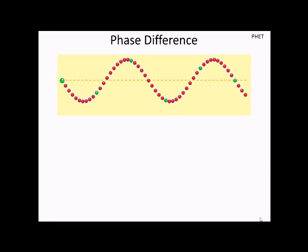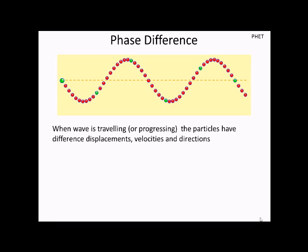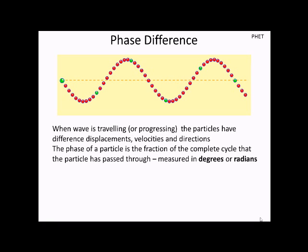First up, phase difference. When a wave is traveling, it's displacing particles. Each particle along the wave is going to have a different displacement. The phase of a particle is the fraction of the complete cycle that the particle has passed through, remembering that one complete cycle is one whole wavelength.